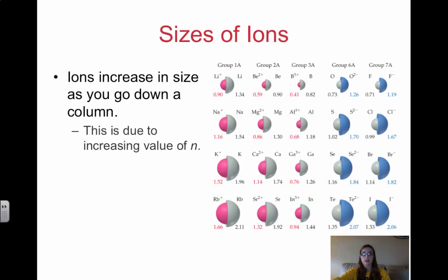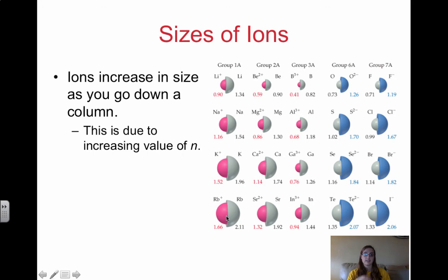When looking at the size of ions, ions increase in size as you go down a column, and again that is because you're increasing your value of n. As you increase your value of n you're adding energy levels, and that increases the size.